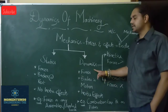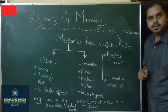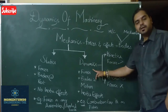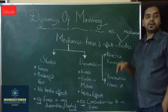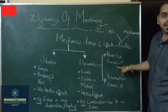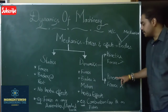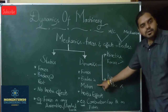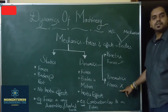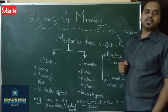Dynamics is again classified into two types: kinetics and kinematics. Kinetics is a branch of dynamics where you will be learning the relative motion between different parts, taking into consideration the forces which are responsible for that relative motion. Kinematics is a branch of dynamics where you study the relative motion between different parts of a machine or mechanism by neglecting the forces responsible for the relative motion.